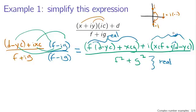We can look at this numerator and say: this is a complex number with a real part and an imaginary part, and it's just divided by a real number — which effectively is just a scaling. It's a relatively simple thing to divide by a real number.